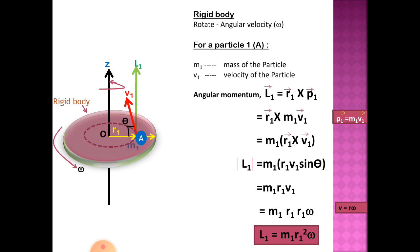Then the angular momentum of this particle A is the moment of its momentum about the origin O. Hence angular momentum of this particle A is L1 equal to r1 cross P1.